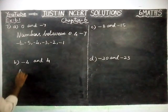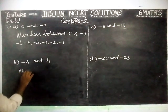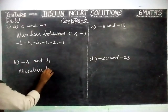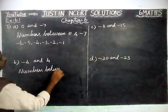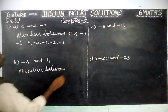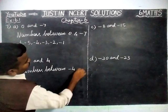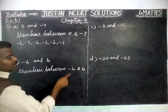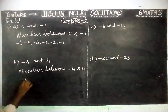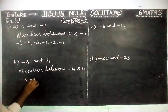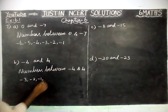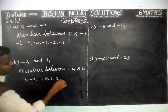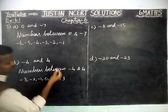And next one, numbers between minus 4 and 4. From the smallest number: minus 3, minus 2, minus 1, 0, 1, 2, 3.